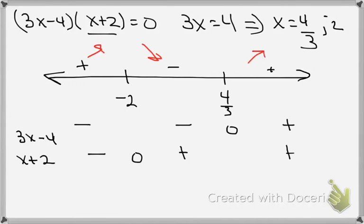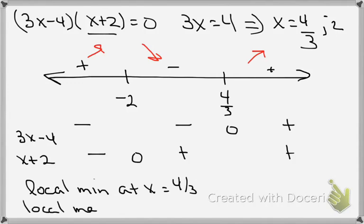So if I look at minus 2, I'm increasing on the left and decreasing on the right, so that means that must be a local maximum. And then at 4 thirds I'm decreasing on the left going downhill and then going uphill on the right, so that must be a local minimum. So I have now that I have a local min at x equals 4 thirds and a local max at x equals minus 2.